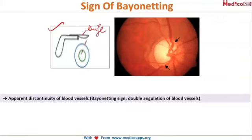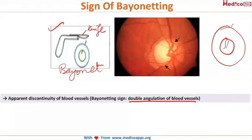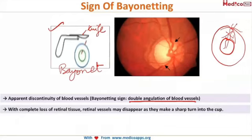The sign of bayonetting refers to double angulation of blood vessels — an apparent discontinuity of blood vessels. As the neuro-retinal rim thins, vessels passing over the rim then down into the cup make two sharp bends and appear to disappear. This double angulation resembles a bayonet, hence the name bayonetting sign.